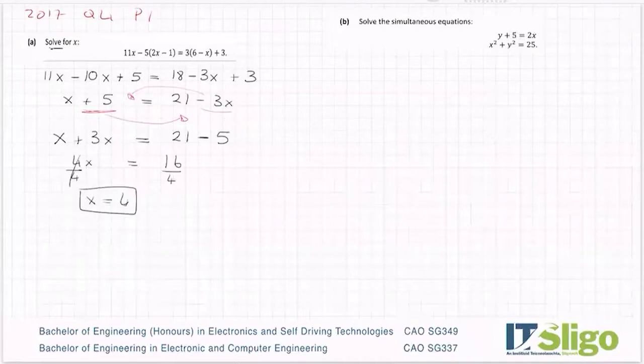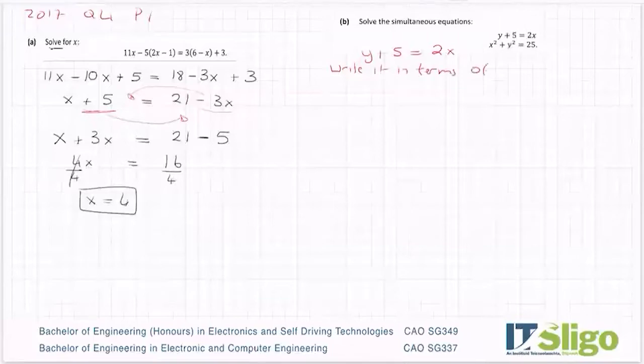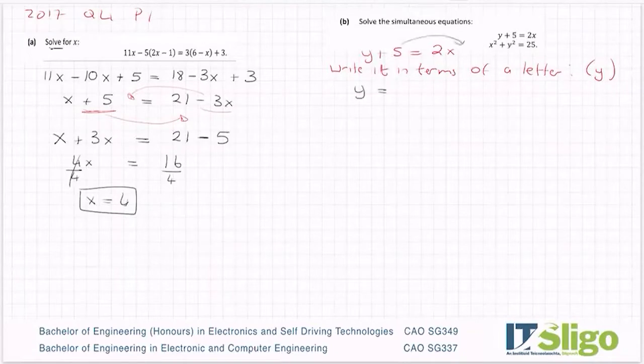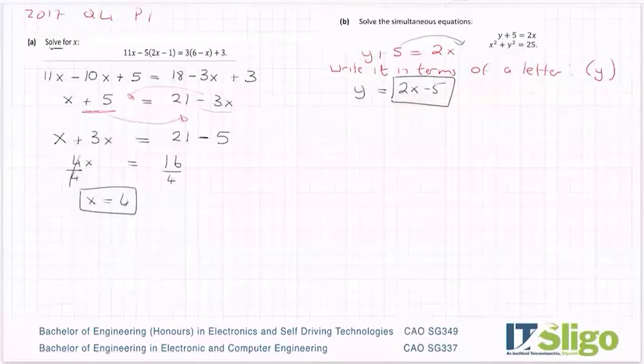So you write it in terms of a letter. I say a letter because it doesn't matter whether you'd write it in terms of x or y, you write it in terms of whichever one is easier. Now when you look at them, you see one of them is fraction based, and the other one isn't. So that's obviously a lot easier to handle than the fraction based one. So let us choose in this one to write it in terms of y. So by that I mean, we are going to take down y plus 5 is equal to 2x. So we're going to write it in terms of a letter. And the letter we're choosing is y, which means I'm going to write it as y equals everything else. So 2x minus 5.